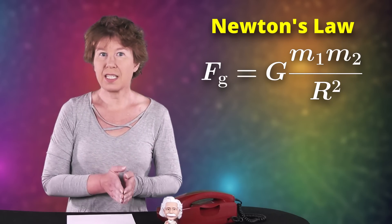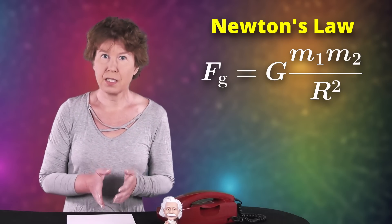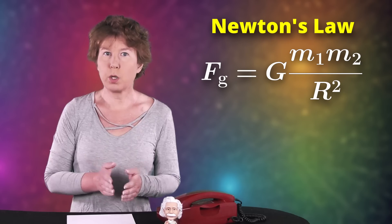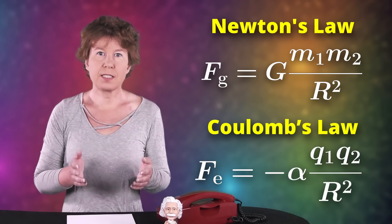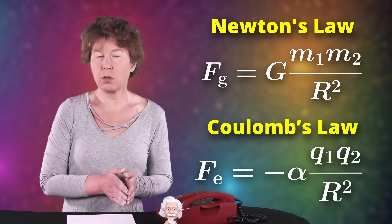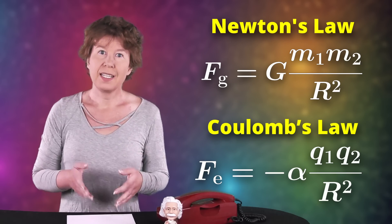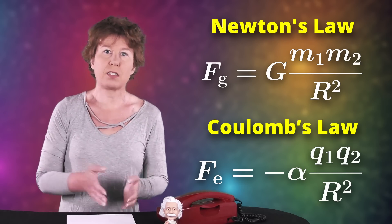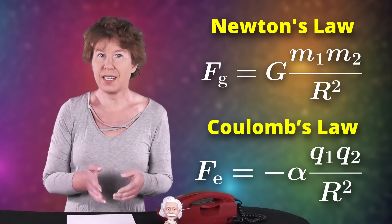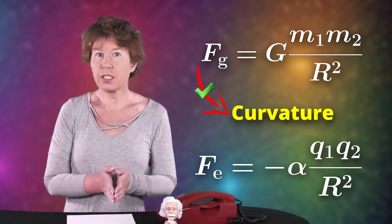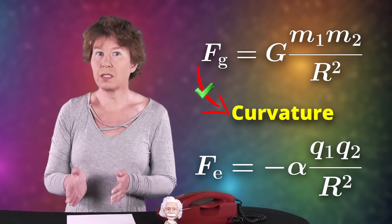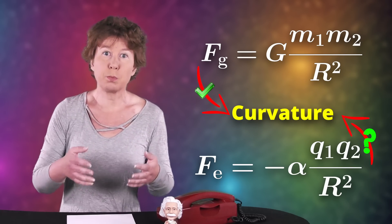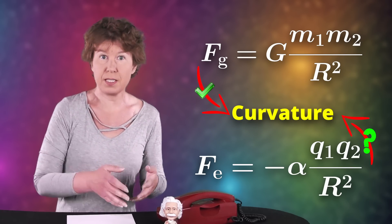These two are similar in that the gravitational force law, which you can assign to a point mass, goes with one over r squared, just like the force law for a point charge. And since Einstein had been so successful with describing gravity as the curvature of spacetime, naturally he wondered whether electromagnetism could be described the same way.